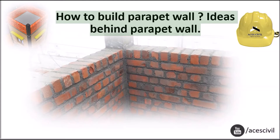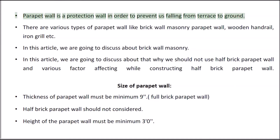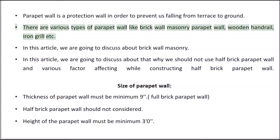Ideas Behind Parapet Wall. A parapet wall is a protection wall in order to prevent us from falling from a terrace to the ground. There are various types of parapet wall, like brick wall masonry, wooden handrail, iron grill, etc.